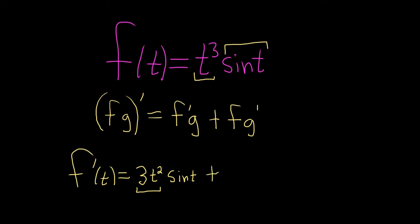plus the first, t³, times the derivative of the second. The derivative of sine is cosine. And that's it.